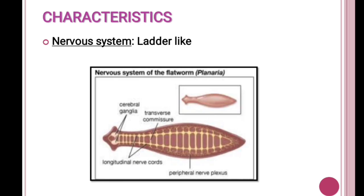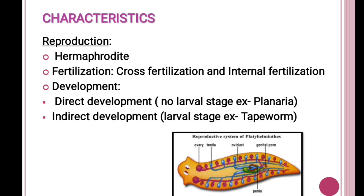Though there is cephalization — meaning the formation of a head — the brain-like structure is not yet developed. They have a network of nerve fibers. In Platyhelminthes, the nervous system is ladder-like, where the nerves are interconnected with the help of transverse connections.